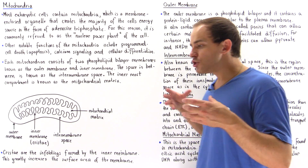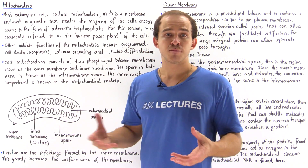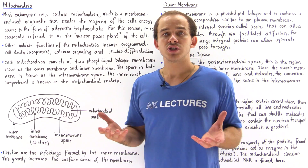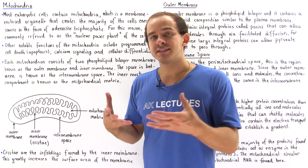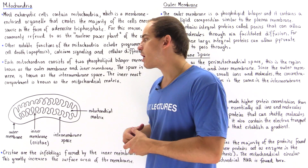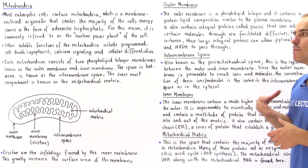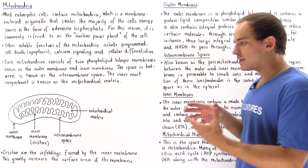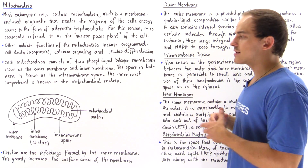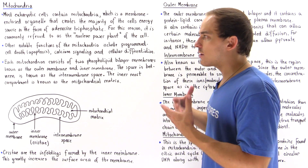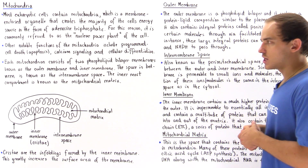It is believed that eukaryotic cells essentially engulfed a prokaryotic cell, such as a bacterial cell, and eventually that bacterial cell developed into our mitochondria. This is known as the symbiotic theory — a symbiotic relationship between the eukaryotic cell and the prokaryotic organism that became our mitochondria.